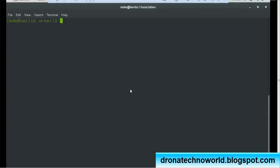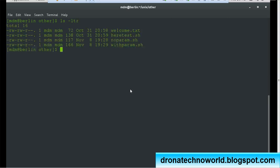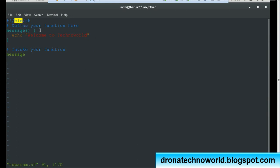In order to demonstrate this functionality, we have created a no parameter shell script. You can see here we define the function with message, and we are doing echo 'Welcome to Techno World'. We are invoking the message function here by simply writing the message keyword.